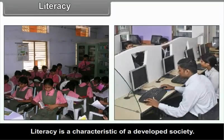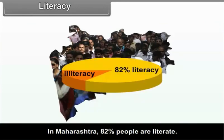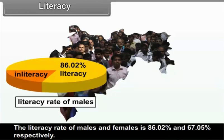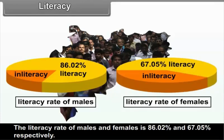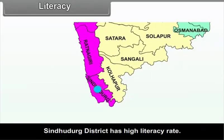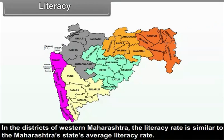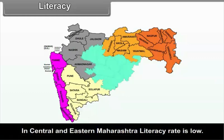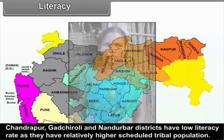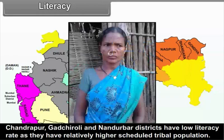7.2.3 Literacy. Literacy is a characteristic of a developed society. In Maharashtra, 82% of people are literate. The literacy rate of males is 86.02% and females is 67.05%. In Mumbai and suburban areas the literacy rate is 87% as it is a fully urban area. Sindhudurg district has a high literacy rate. In central and eastern Maharashtra the literacy rate is low; Chandrapur, Gadchiroli, and Nandurbar districts have low literacy due to relatively higher scheduled tribal population.